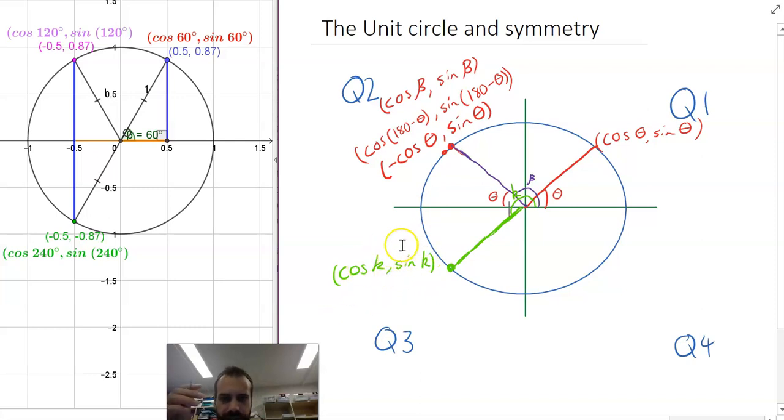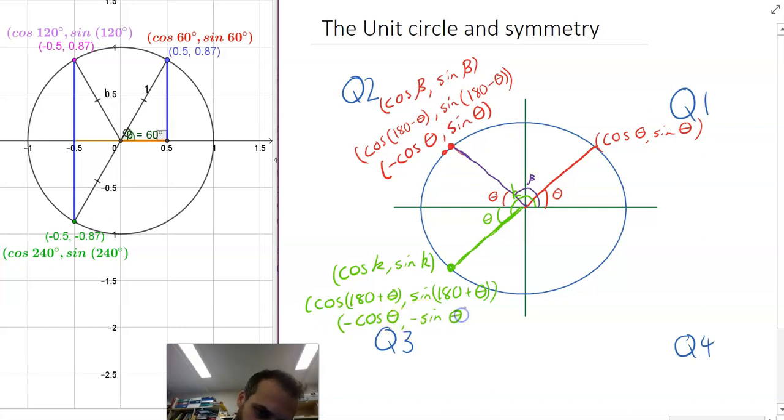Now, that is equal to 180 plus theta. So, we've got our little green theta in here, and that's cos 180 plus theta sine 180 plus theta. And then, of course, we can make it just as simple as we did in our quadrant 2, but this time that's going to be equal to negative cos theta, negative sine theta.